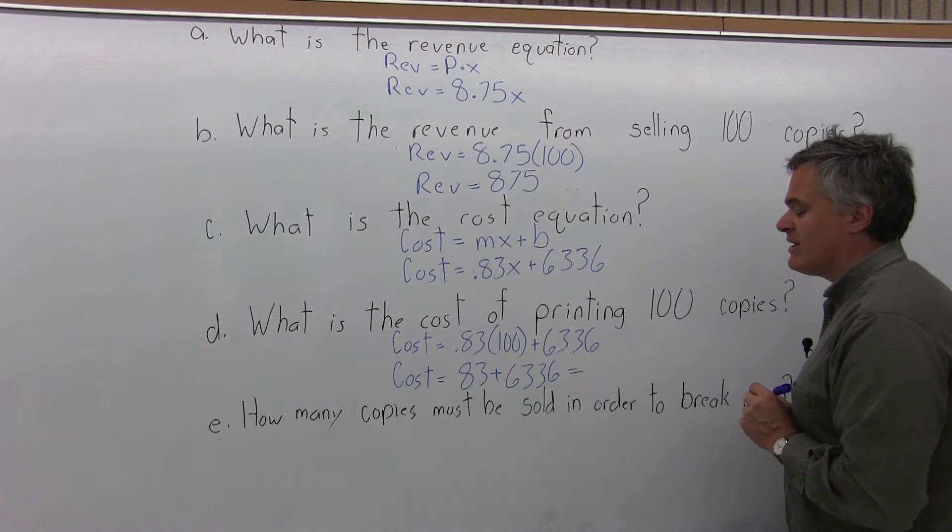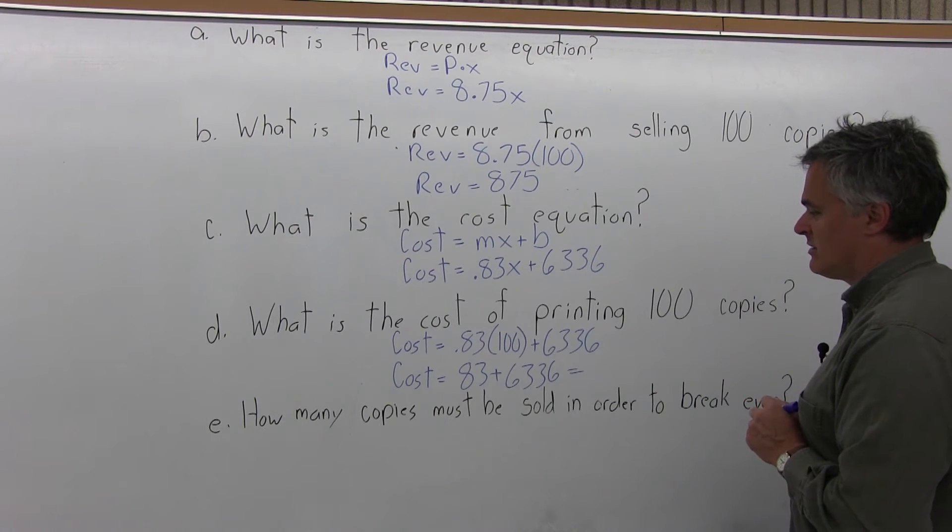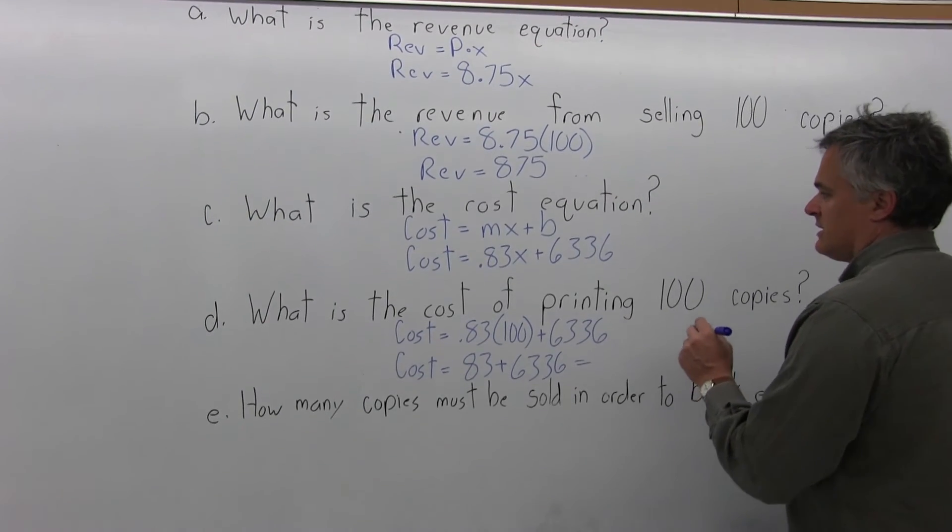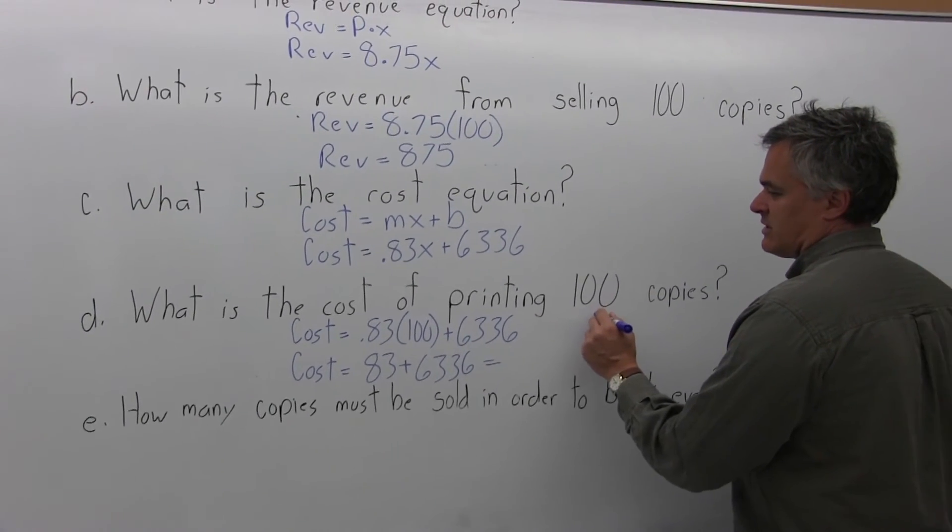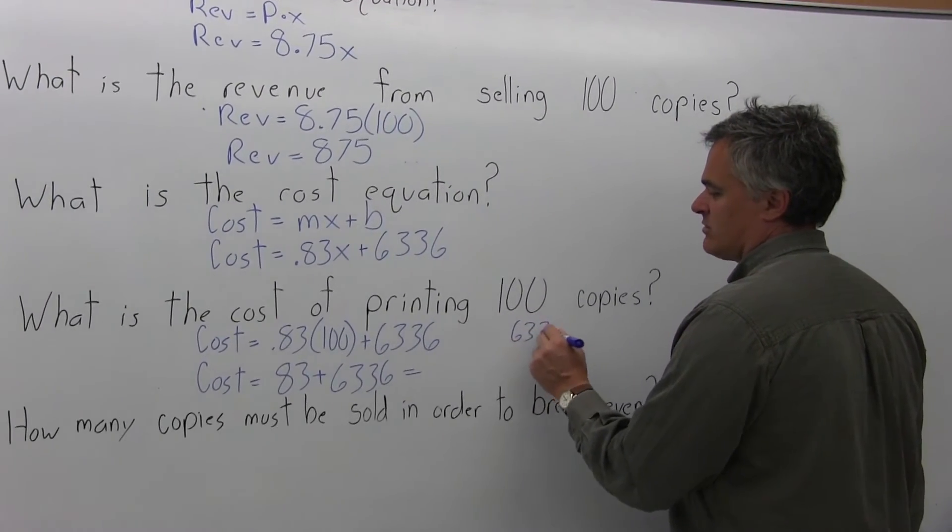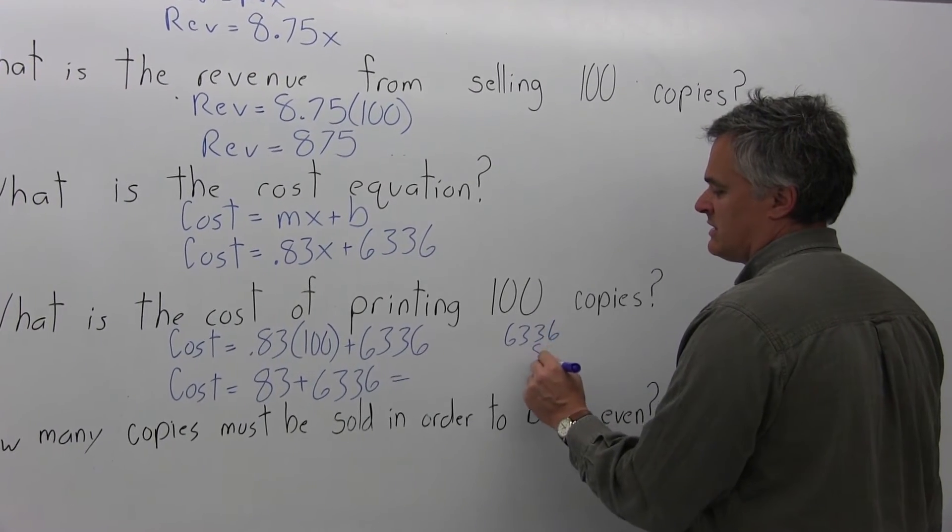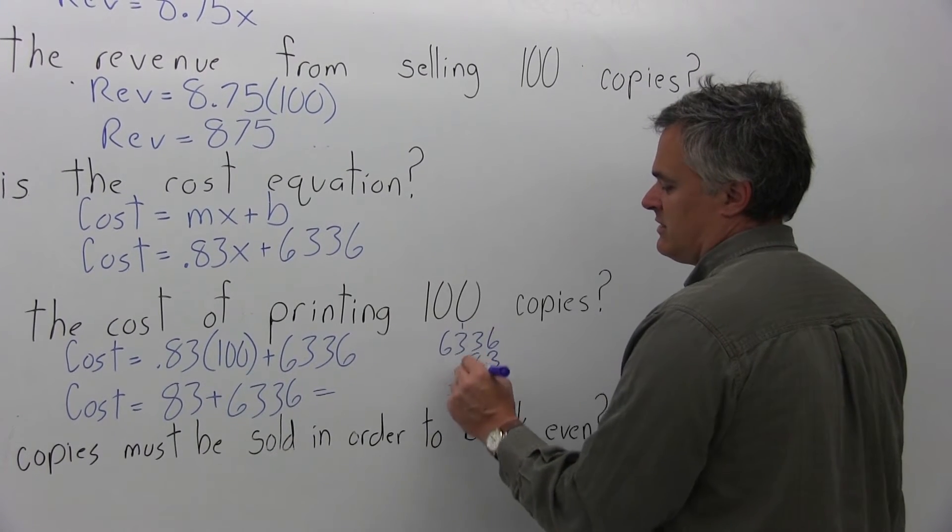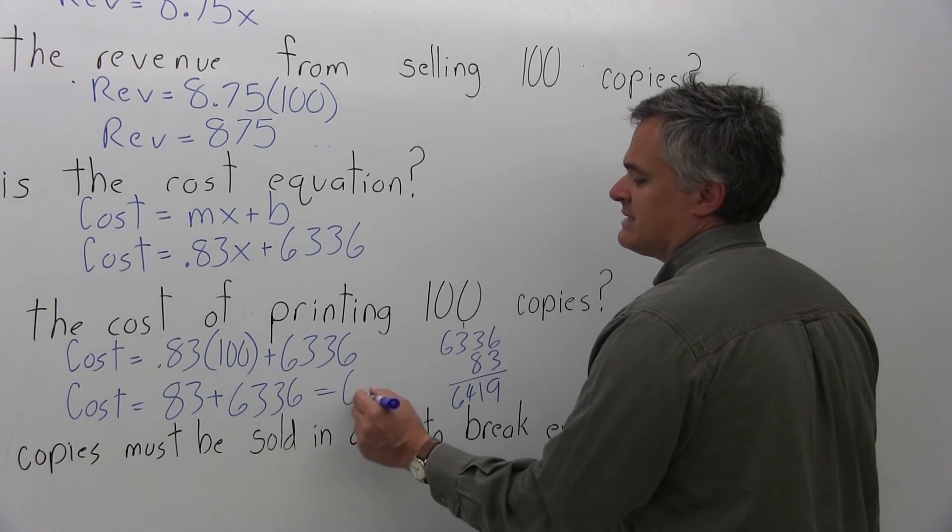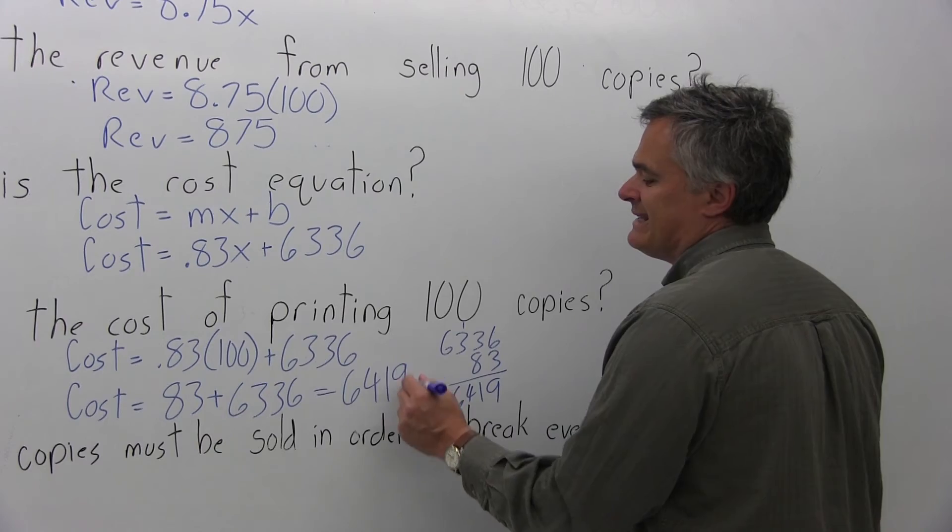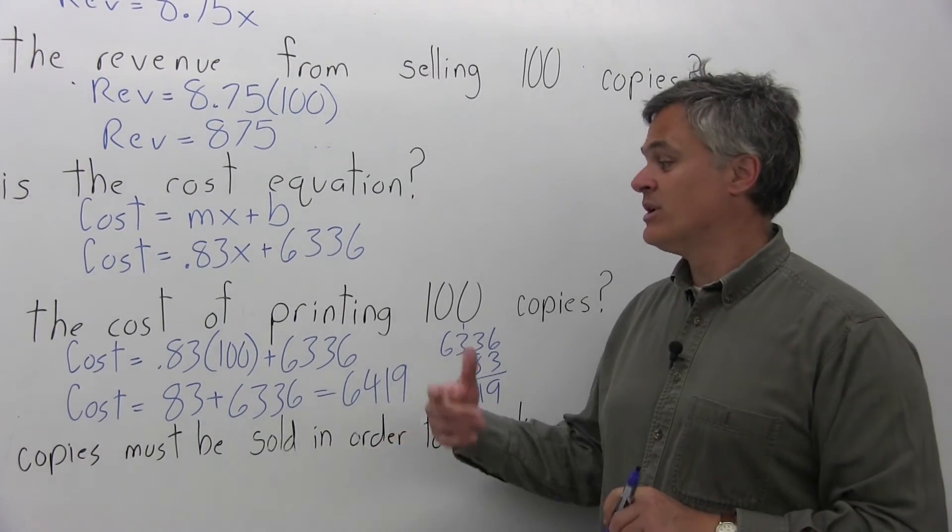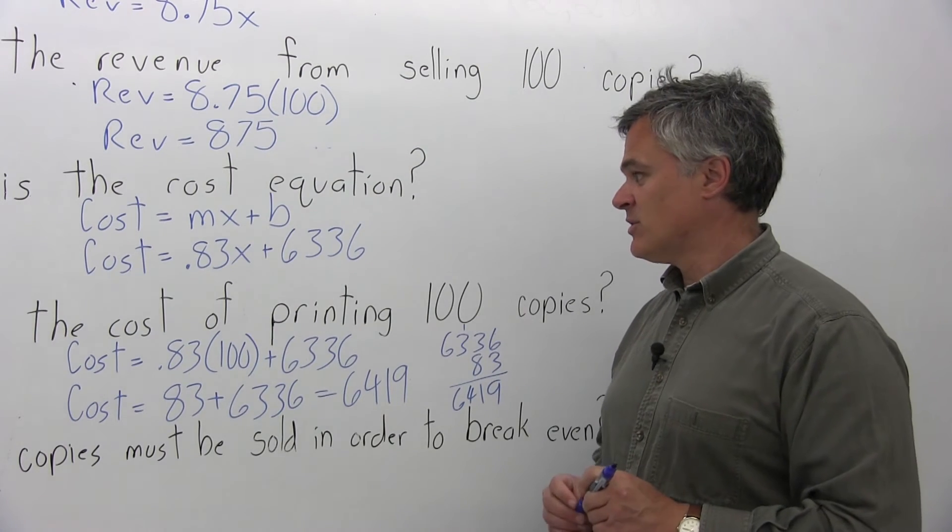If I add those together, 6,336 plus 83 equals $6,419. It will cost $6,419 to print 100 copies of the Lizzie Borden Quarterly.